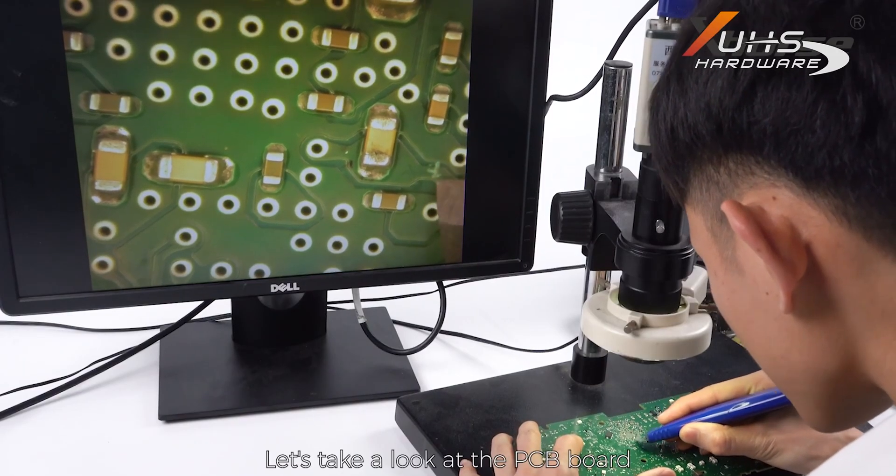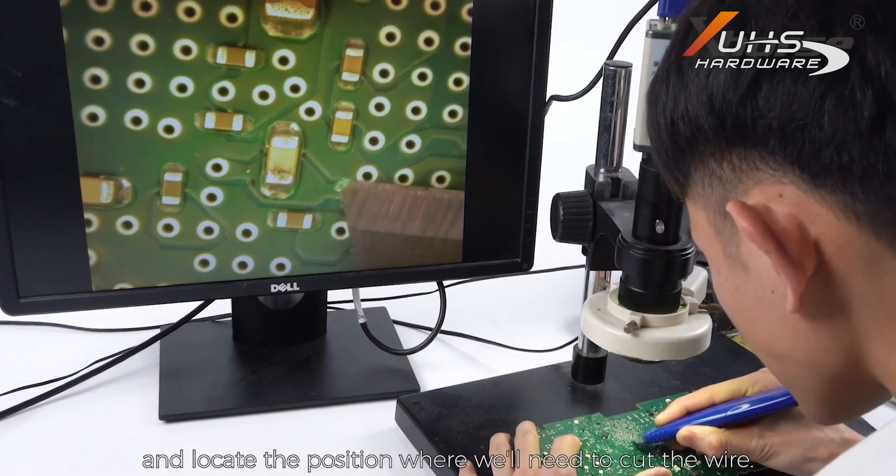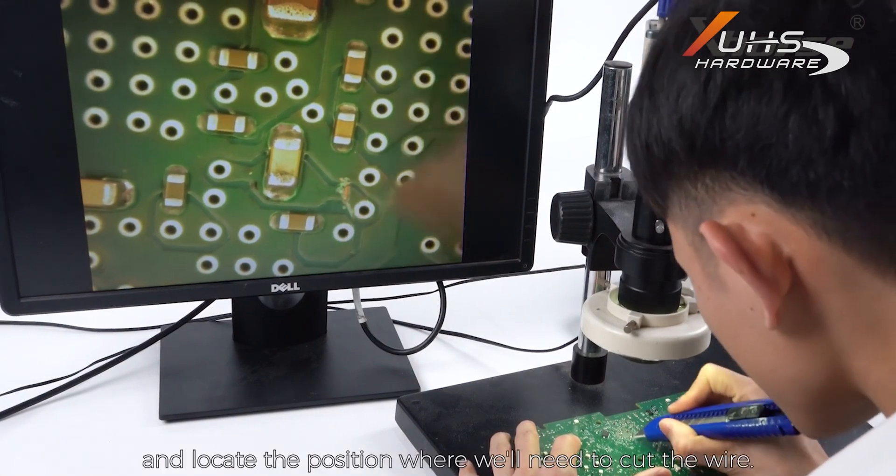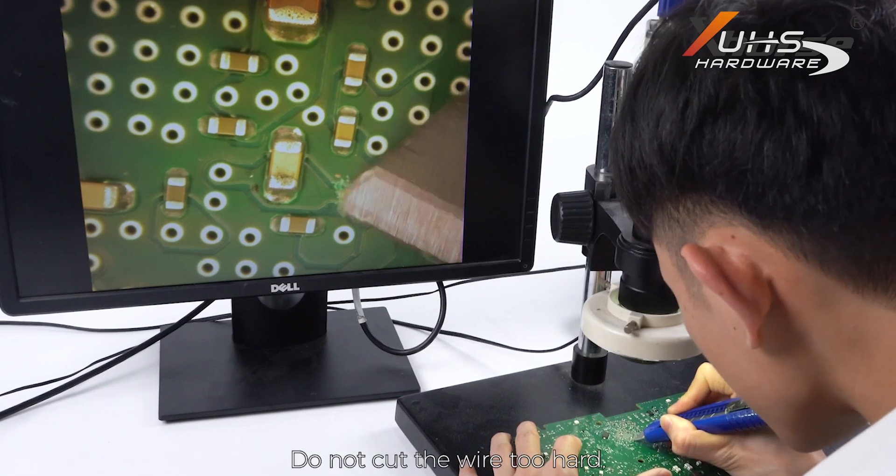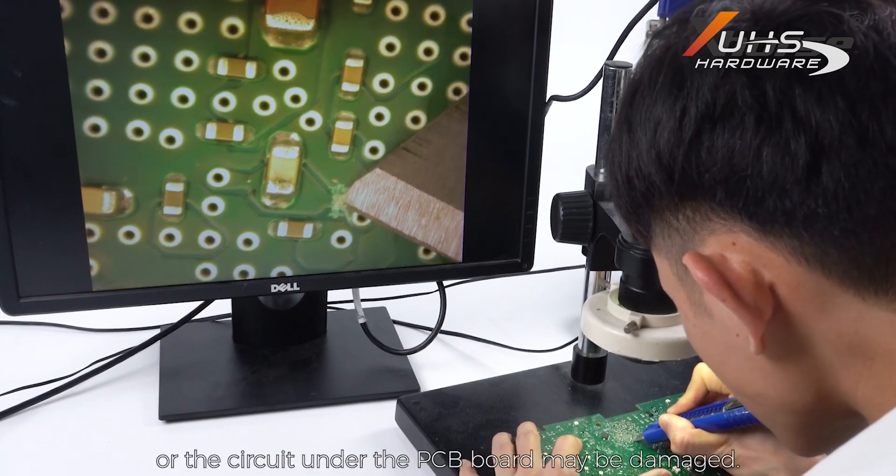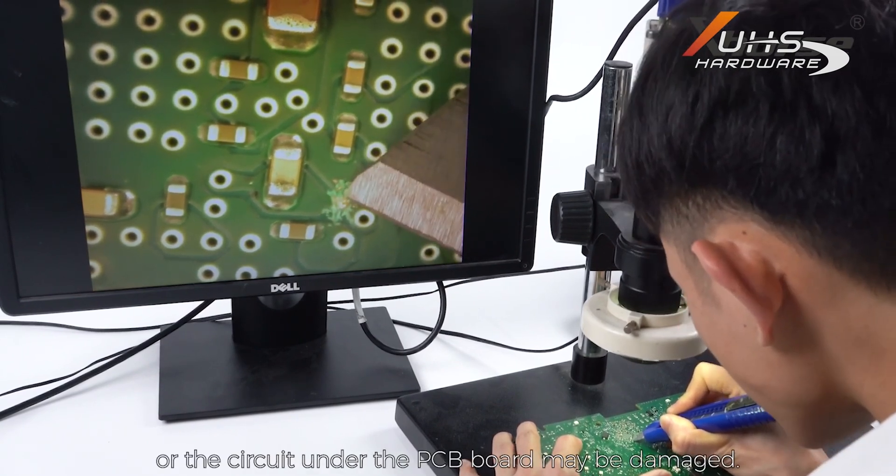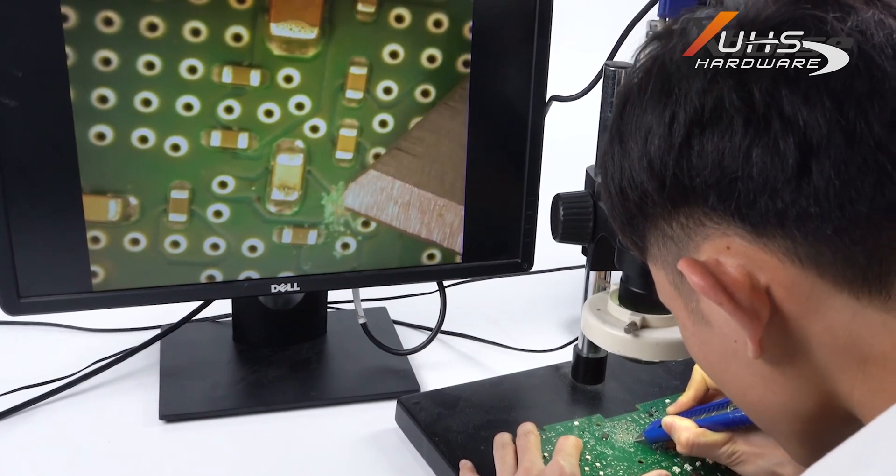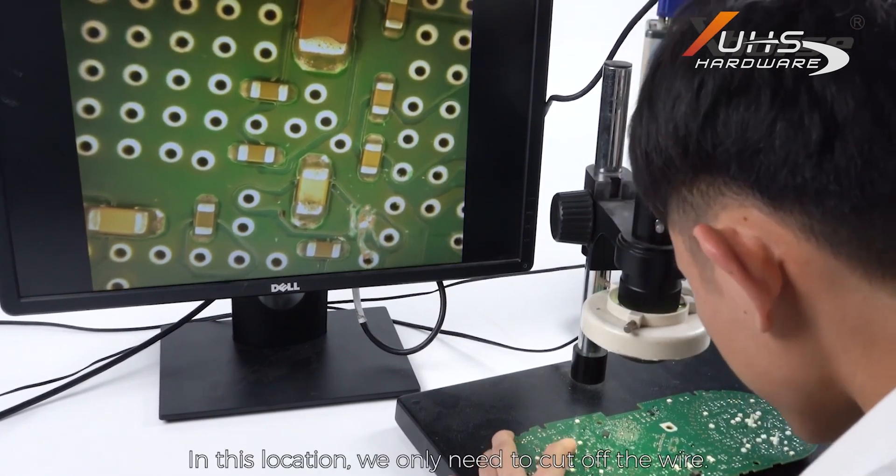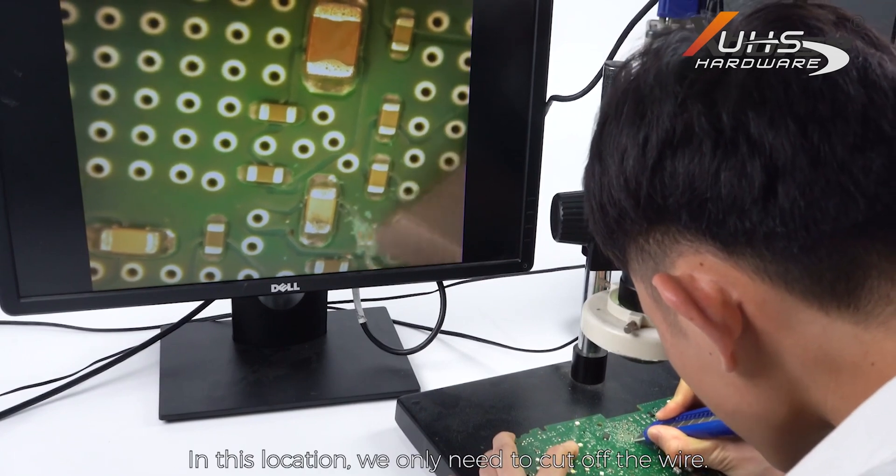Let's take a look at the PCB board and locate the position where we need to cut the wear. Do not cut the wear too hard or the circuit under the PCB board may be damaged. In this location we only need to cut off the wear.